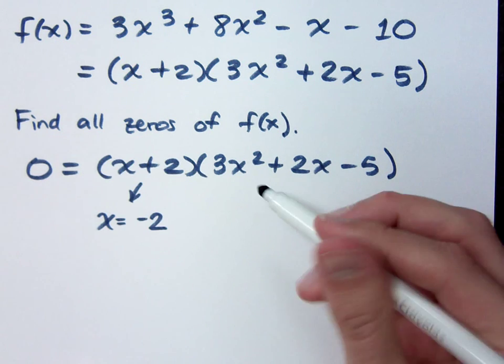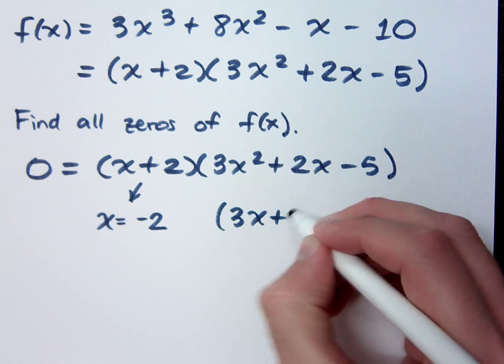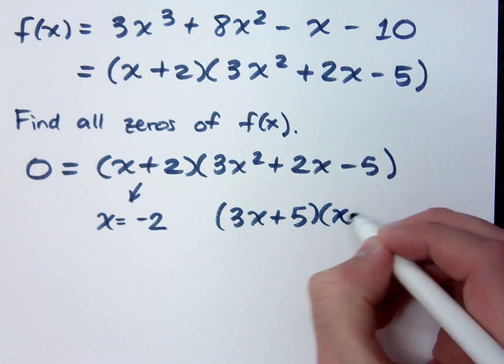So this guy does factor. How does he factor? 3x plus 5 and x minus 1. Is that right?